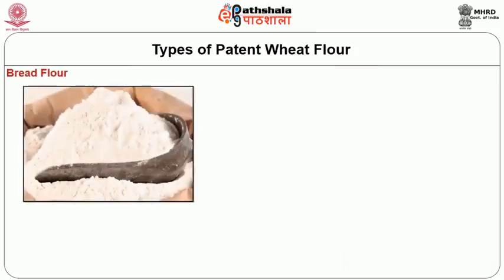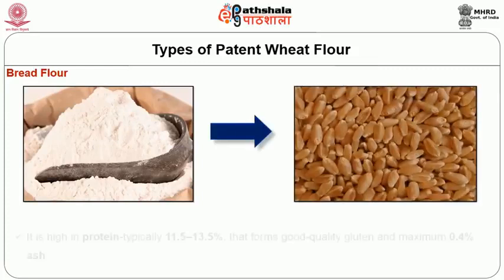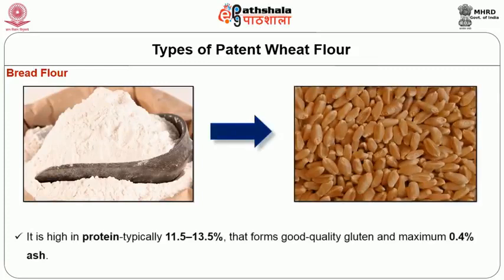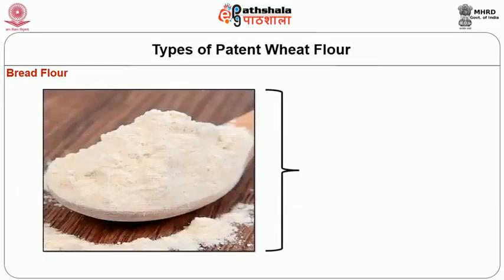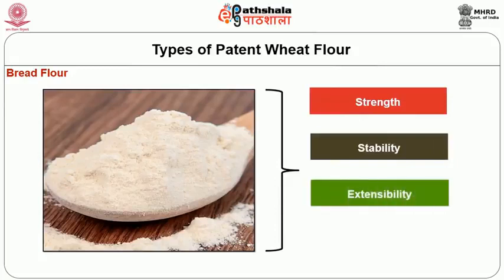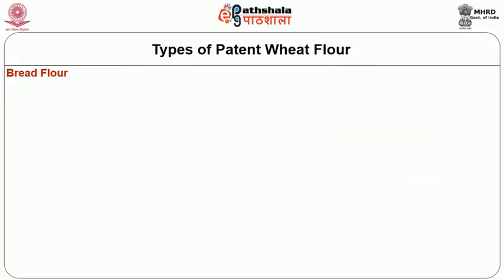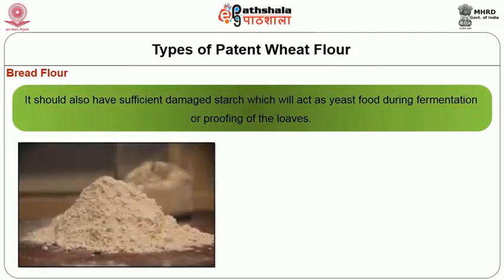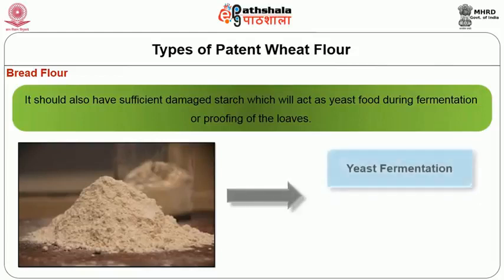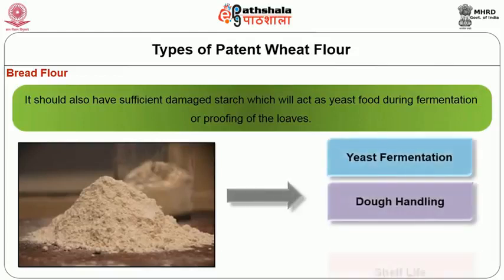Bread flour is generally obtained from hard wheat. It is high in protein, typically 11.5 to 13.5 percent, that forms good quality gluten, and has a maximum 0.4 percent ash. This flour should form gluten of necessary strength, stability, extensibility, and gas retaining property. It should also have sufficient damaged starch to act as yeast food during fermentation or proofing. Sometimes it contains added malted barley flour to provide better yeast fermentation, dough handling, and shelf life.